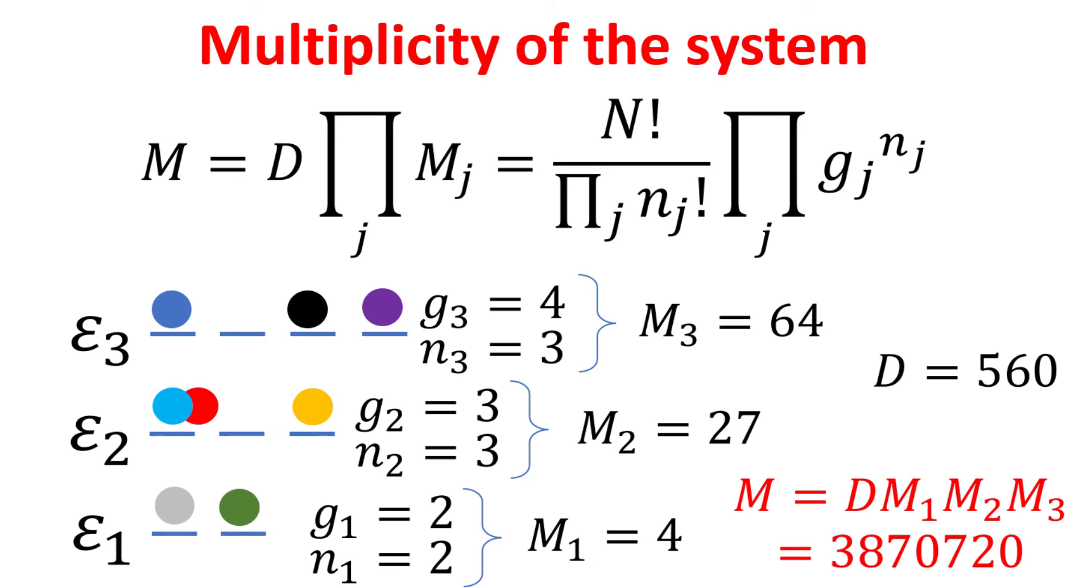We can work out the total number of arrangements in this system to be about 3.8 millions, a very large number indeed. You should pause the video and repeat this calculation yourself.